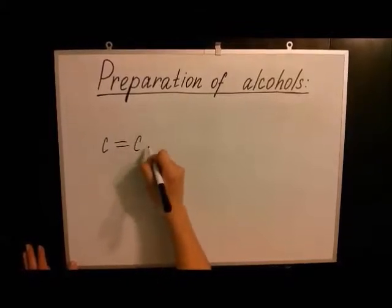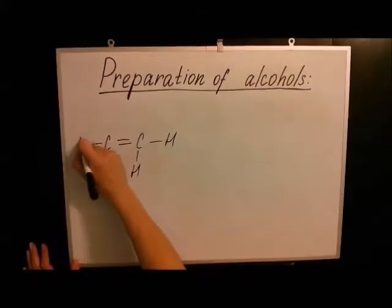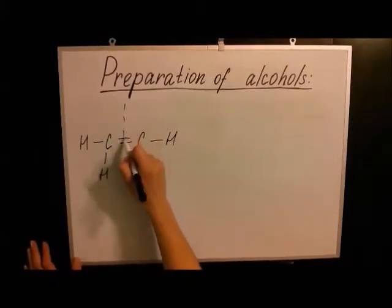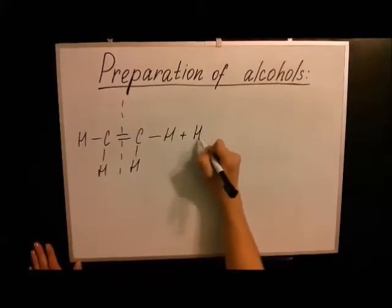In a hydration reaction, we will add a molecule of water across a double bond. If we prepare an alcohol from a symmetric alkene, such as ethene, which looks like this, we will get one product, ethanol.